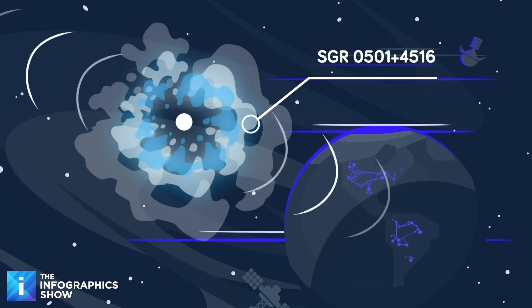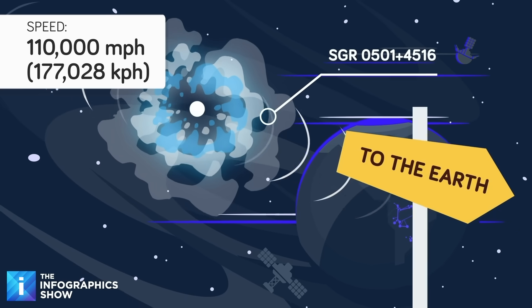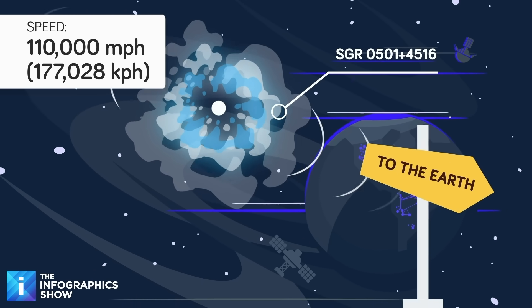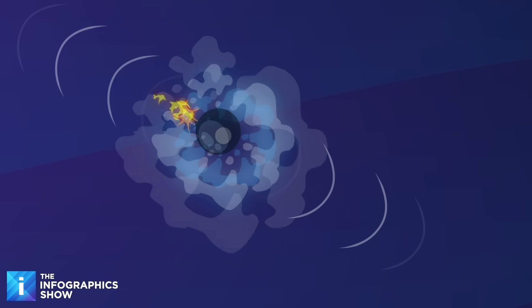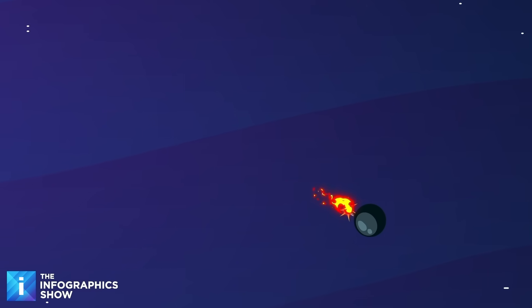It is tearing through the galaxy at over 110,000 miles per hour, and it's heading in our direction. It's effectively an out-of-control cosmic cannonball that could lead to us all having a very bad day.